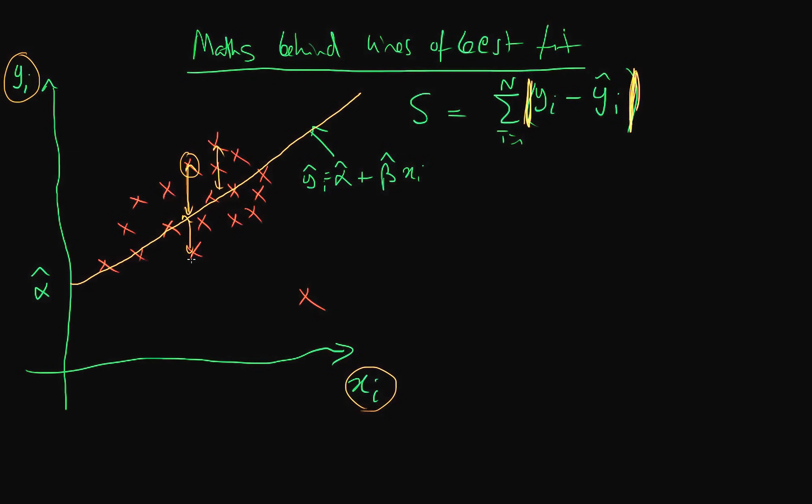We care just as much about a point which is below our line as a point which is above our line, and we don't want in our sum these two things to cancel one another out because one is negative and one is positive. That's why I've used the modulus sign.